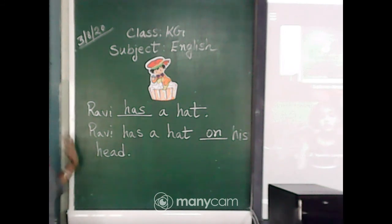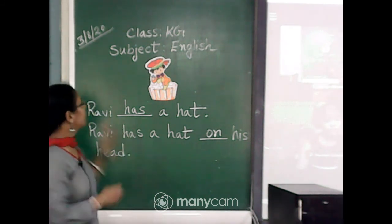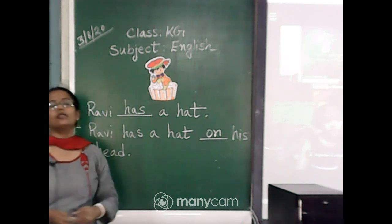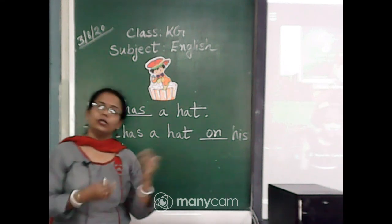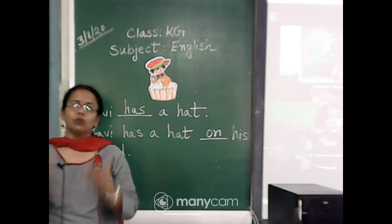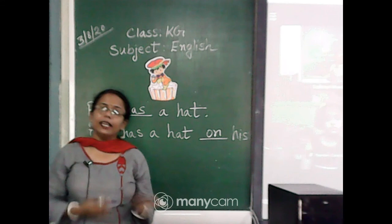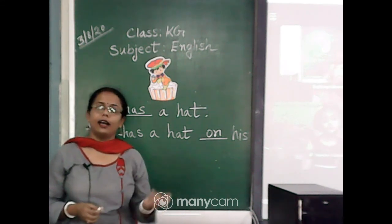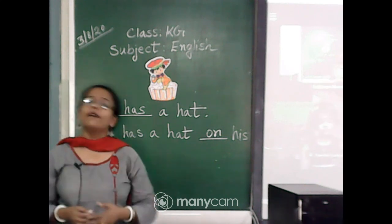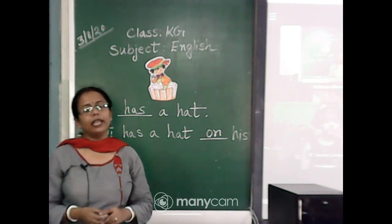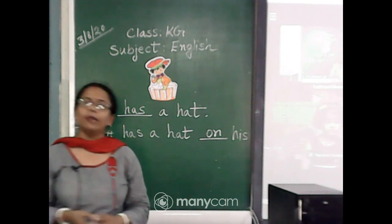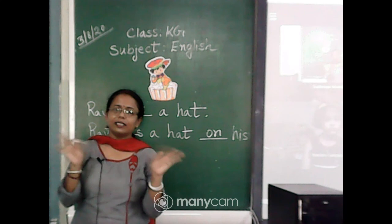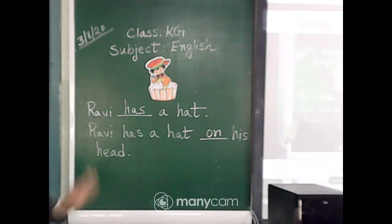This is what we did today. Along with the pictures, we did some sentences where we learned where to use 'has', where to use 'on', and where to use 'in'. We also learned where to use 'is' and 'are' with the help of these fill-in-the-blank activities. I conclude my class today and I will be coming next with the science class. Thank you, students — bye-bye!